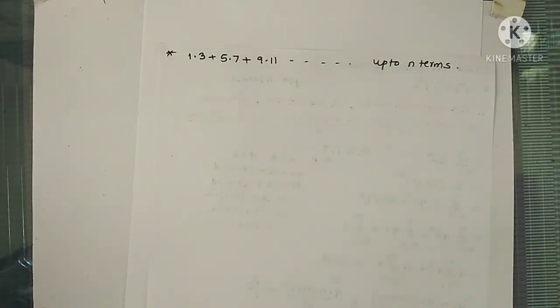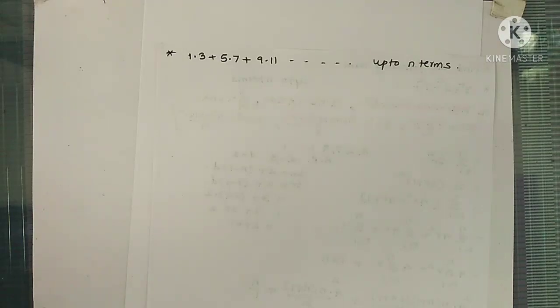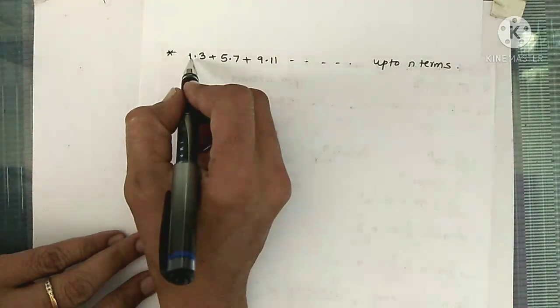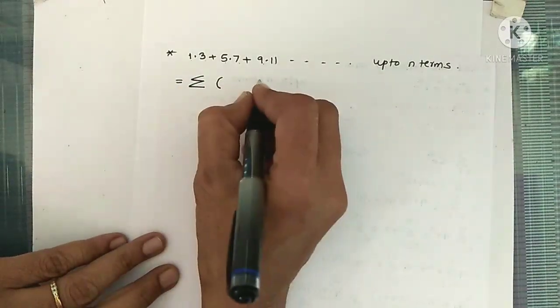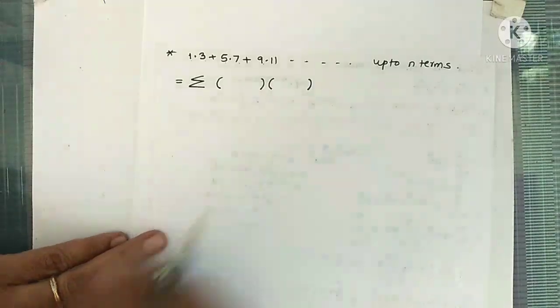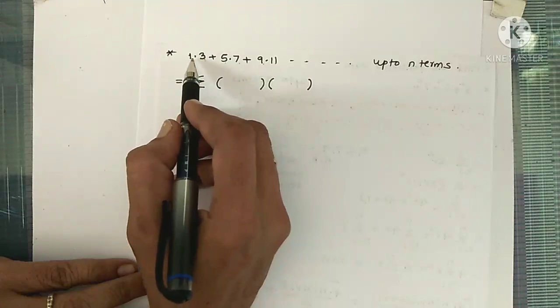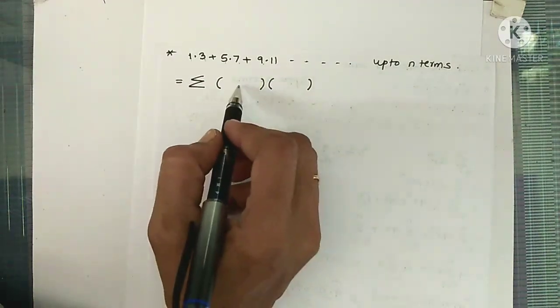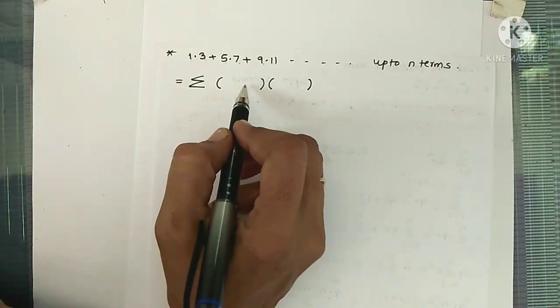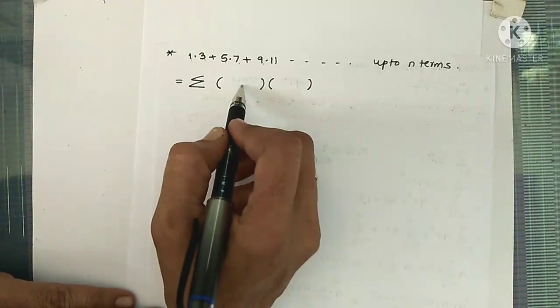Now consider the next question: 1×3 + 5×7 + 9×11, and so on up to n terms. Note it is 1 multiplied by 3, then 5 multiplied by 7. Each term contains a product of two numbers, so we write two brackets in the summation. Adding 2 to the first number gives the second number in each pair.